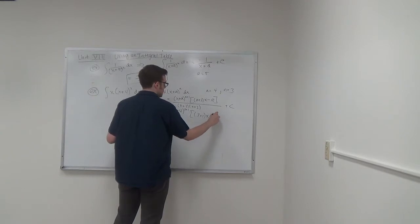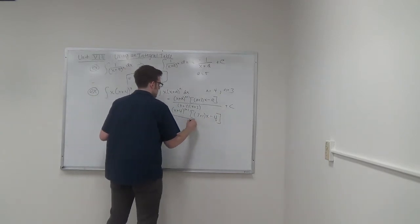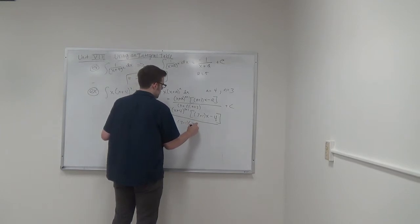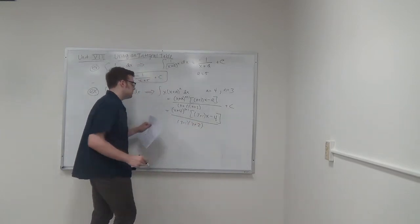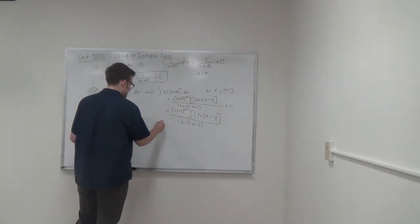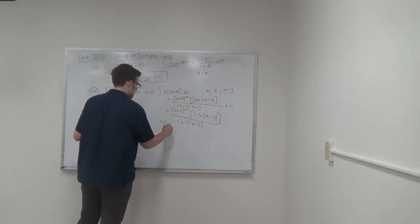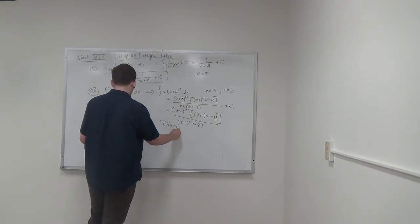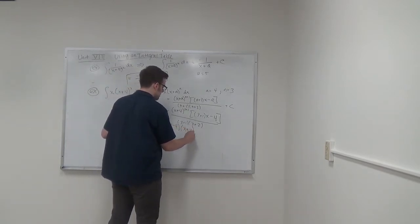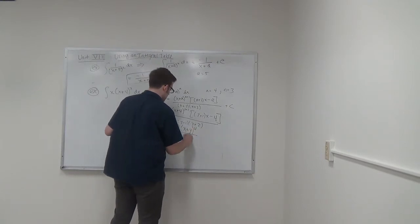So we can rewrite this as 4 times x minus 4 times x plus 4 to the 4 over 4 times 5.